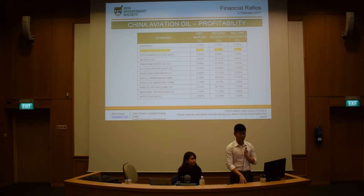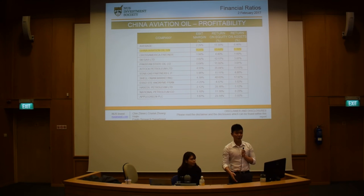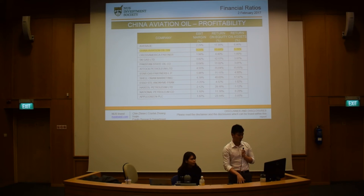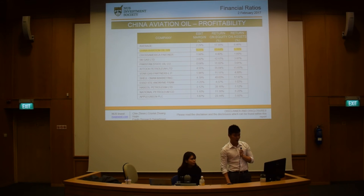For China Aviation Oil, what matters is margins. Because they do jet fuel trading, they just buy and sell — their main cost is COGS. So gross margins and unit margins are really how they make their money. In this sense, even though for oil and gas there might be other relevant ratios, when it comes to jet fuel trading these margin ratios are more important. Looking at them, you can actually see that China Aviation Oil is not doing that well compared to the market, and that might be why its PE is low.